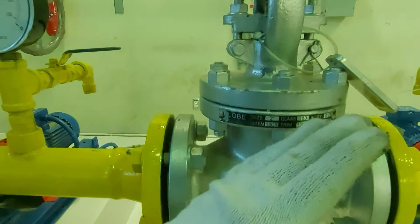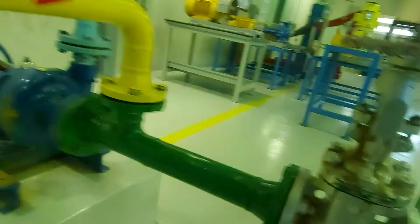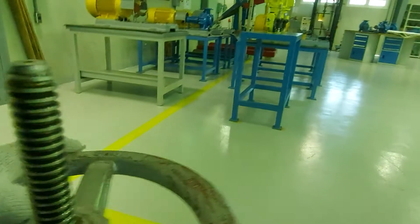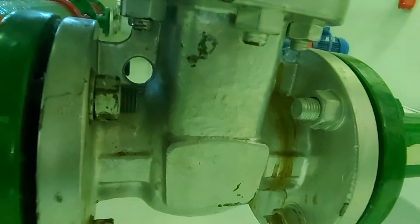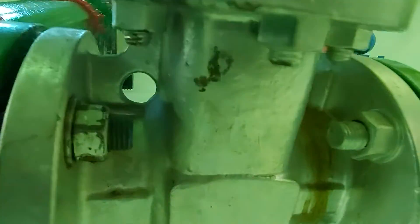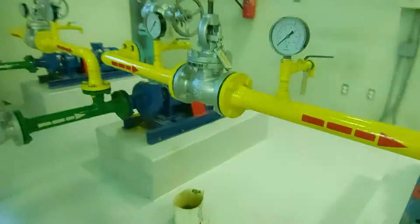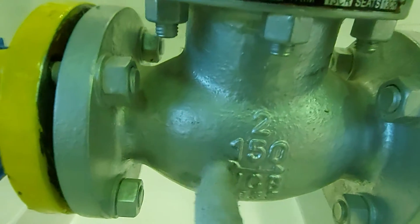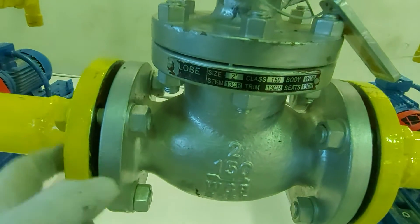Whereas gate valve doesn't have any arrow. It doesn't have any arrow, so you can use it in either side. Globe valve, you have to use it in only one direction - input in inlet, outlet.